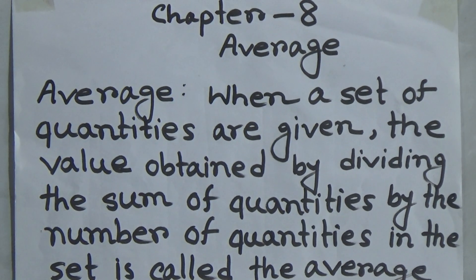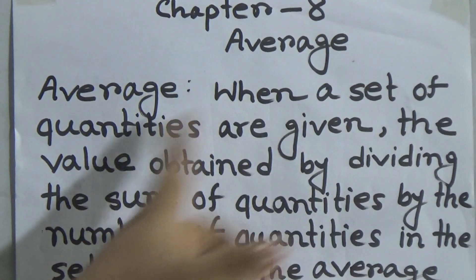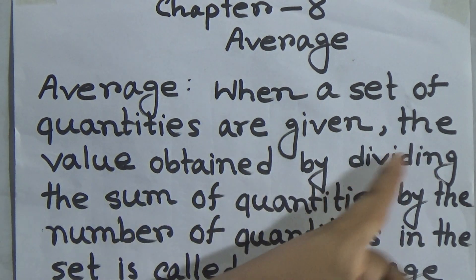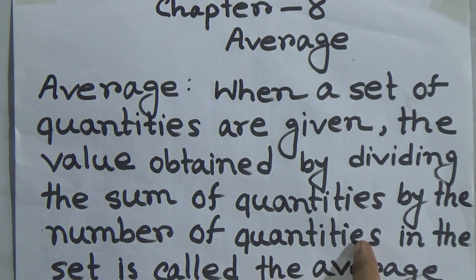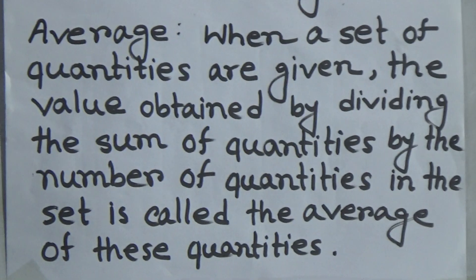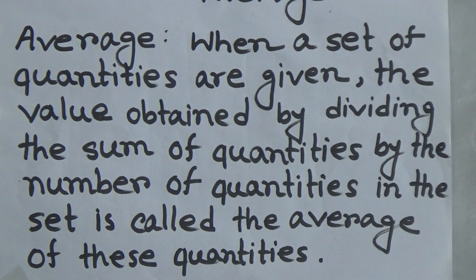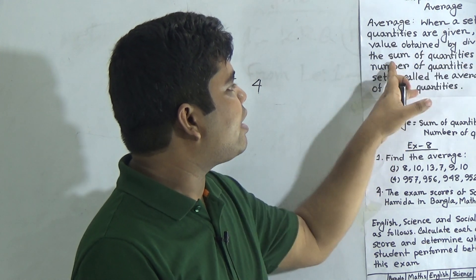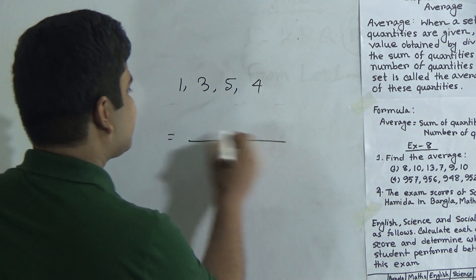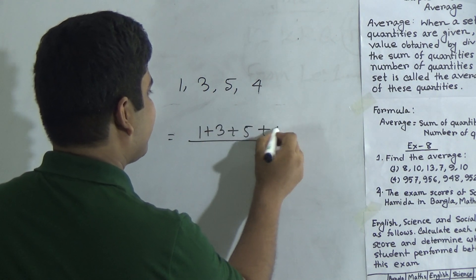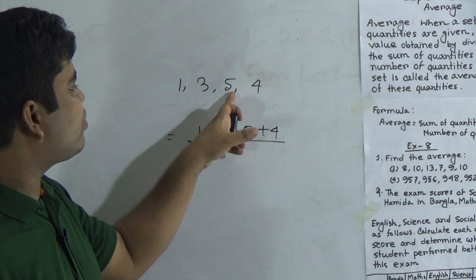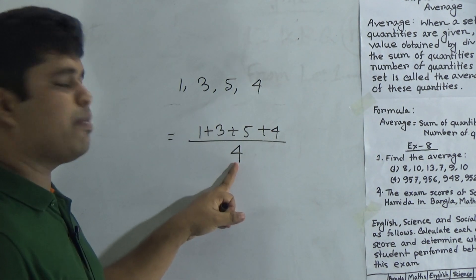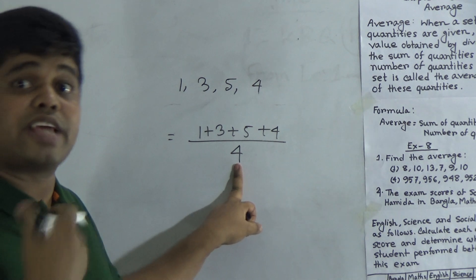At first we need to know what is Average. When a set of quantities are given, the value obtained by dividing the sum of quantities by the number of quantities in the set is called the average of those quantities. For example, given the numbers 1, 3, 5 and 4 — there are 4 numbers. So 1 plus 3 plus 5 plus 4 divided by 4 gives us the average. The sum is 13, and 13 divided by 4 gives 3.25, which is the average.